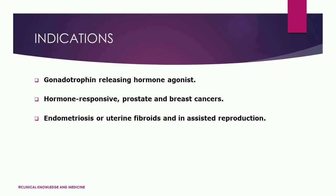The indications for buserelin: as a gonadotrophin releasing hormone agonist, we use this in prostate and breast cancers, endometriosis or uterine fibroids, and in assisted reproduction. Assisted reproduction is used for treatment of infertility, such as in vitro fertilization.